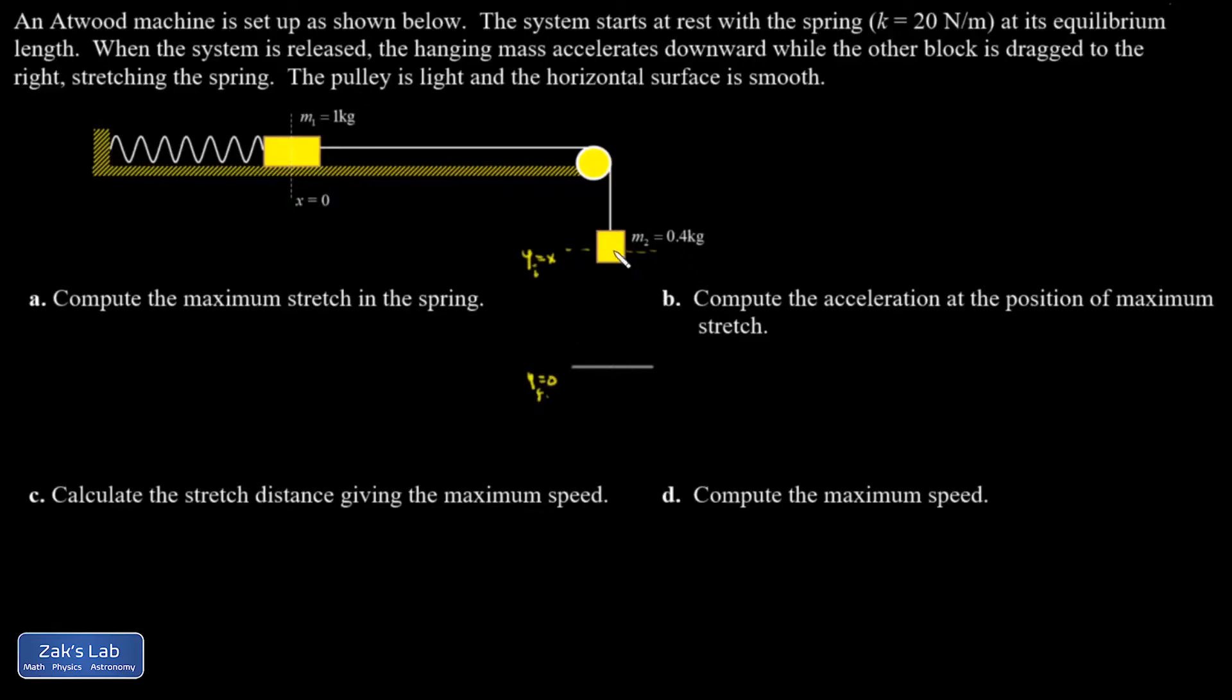And as m2 is falling, m1 is being dragged horizontally. And it ends up over here. And that is also a distance of x. Again, at the maximum stretch location, everything is going to be stationary right before this thing springs back. So all the kinetic energy terms in the energy conservation analysis will be zero. So let's get started.